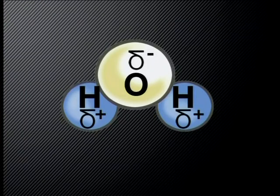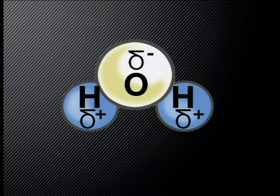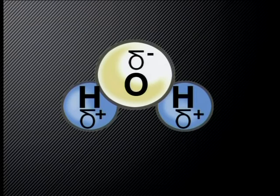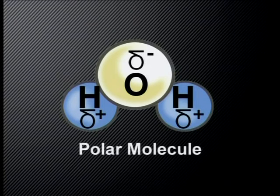A water molecule consists of one oxygen and two hydrogen atoms. They are joined together by covalent bonds, which means that electrons are shared between the atoms that are bonded together. In the case of a water molecule, the electrons are not shared equally. The oxygen atoms end up with a greater share of the electrons, and the hydrogen atoms have a smaller share. The oxygen atom therefore has a slightly negative charge, and the hydrogen atoms have a slightly positive charge. Because there is a difference in charge on different ends of a water molecule, we call it a polar molecule.